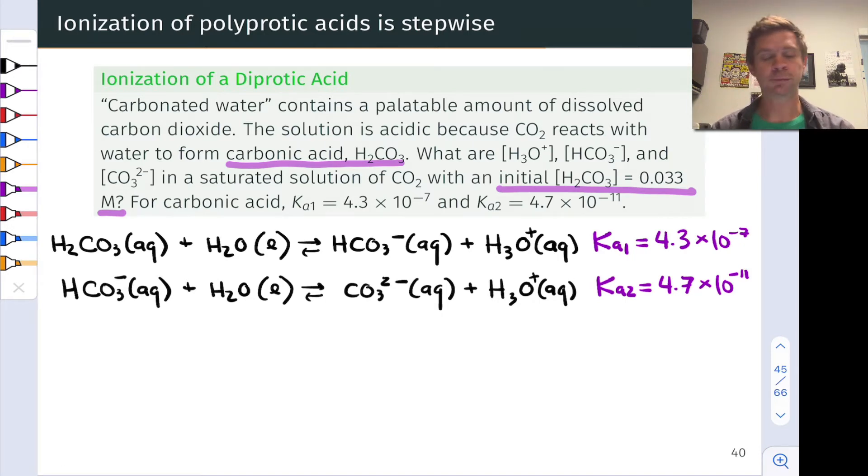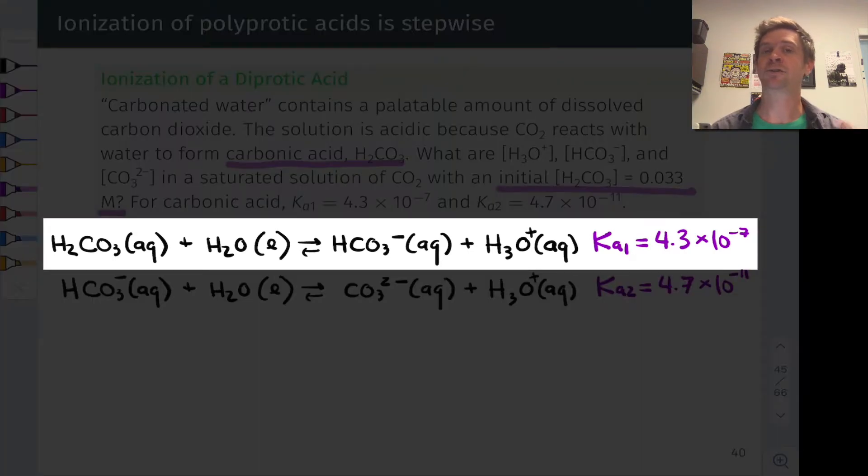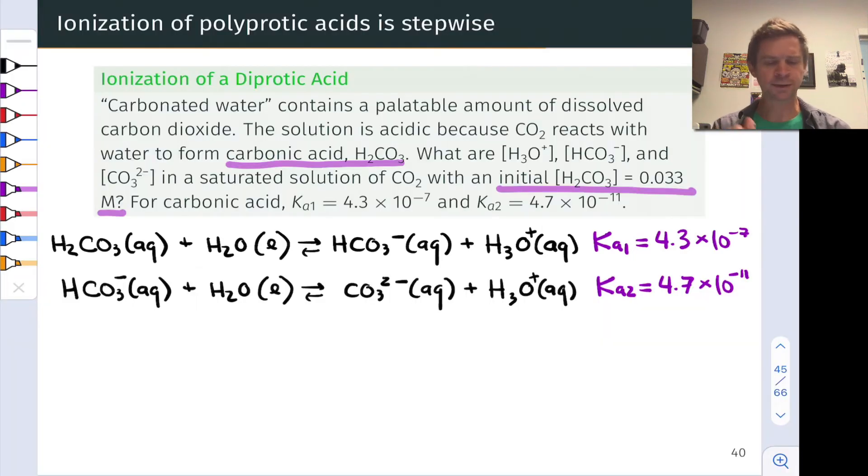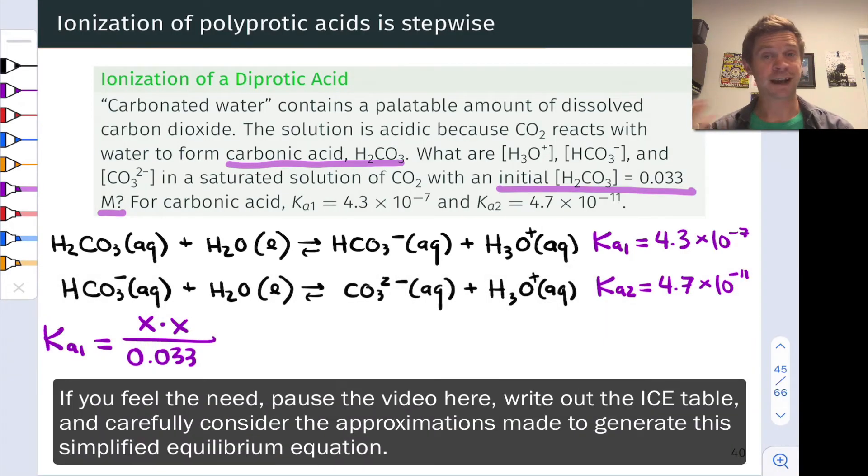To find the equilibrium hydronium ion concentration, we're going to start with that reaction that has the larger Ka value. That's really going to drive the production of H3O+. And we can think about that in terms of an ice table and an equilibrium-based approach here, and say, alright, my initial H2CO3 is 0.033 moles per liter. And that's going to go away to some extent and produce H3O+ and HCO3-.